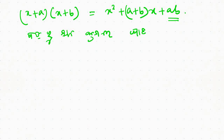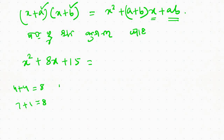We have to solve the problem with x, multiplied by a and b. This is the last example of this. We can solve the problem with x to get 8. Let us try: 4 plus 4 is 8; 7 plus 1 is 8. But 4 into 4 is 16, not 15. And 7 into 1 is 7, not 15.